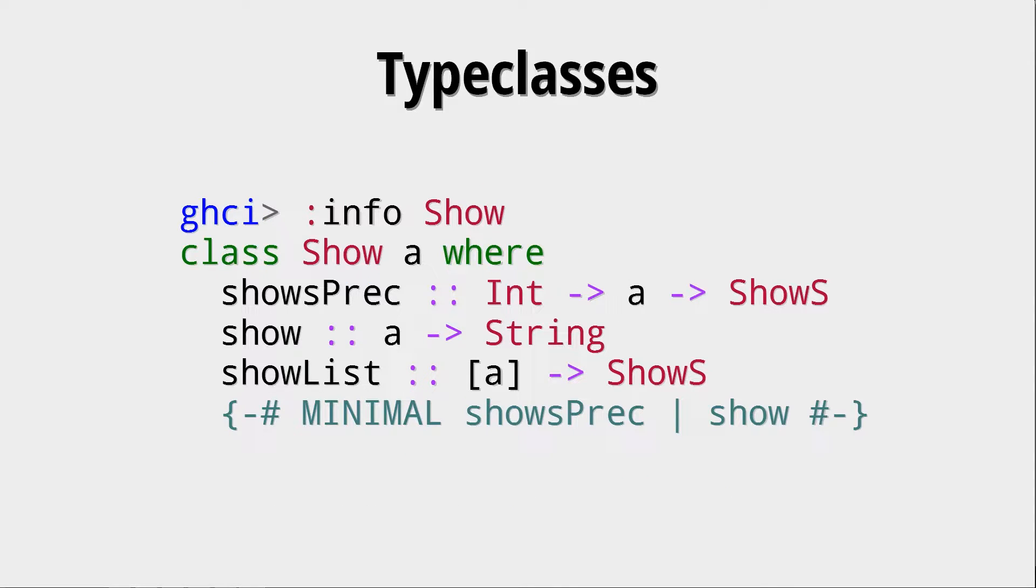So maybe let's look at other type classes that are really interesting, like Show. If you want to print a type in GHCI, for example, by just typing out this type, it has to have an instance of the Show type class. Here we see something else which is interesting. We have this minimal shows, showsPrec, and show. What does that tell us? Well, this tells us that we do not need to create all of the functions that we see here, all of the three.